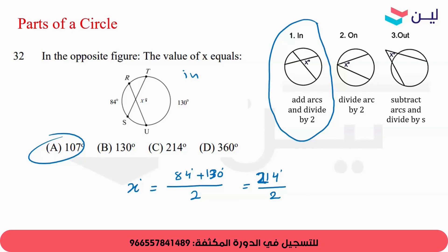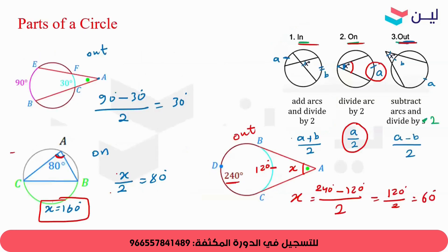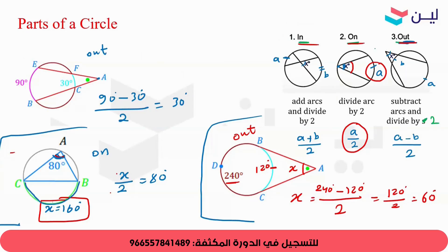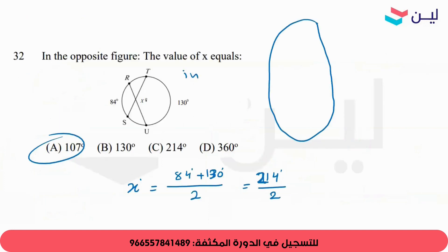Lua, can you open your mic? Which part didn't you get? The on case? Yes. This is the angle and this is the arc. For on, we divide the arc by 2. Here we don't have the arc, so we multiply by 2 to find it. Thank you, teacher.